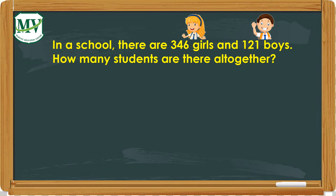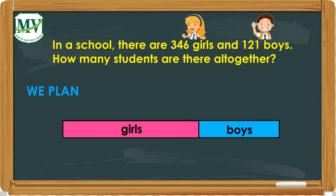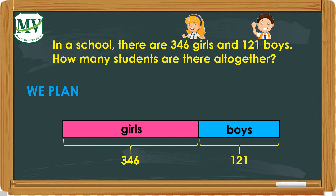Let's go now to step 2: we plan. In this step, we will draw a bar model for our word problem. Let's divide the bar into two — the pink part for girls and the blue part for boys. So we have 346 girls and 121 boys. How many students are there all together? Remember, all together means we are going to add all the numbers.